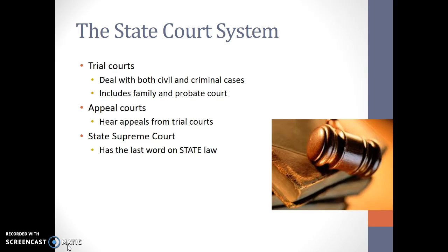We actually have two levels of courts. In the United States, we have the state and the federal court system. The state court system deals with trial courts, appeals courts, and then they usually have a state Supreme Court or a high court. Trial courts deal with civil and criminal cases. Civil cases are things like business contracts, breach of contracts, divorces, adoptions, things like that. Appeals courts hear appeals from those trials. And then the state Supreme Court has the last word on state law.